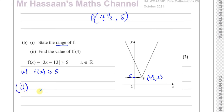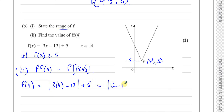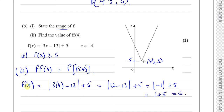Part b(ii) says: find f of f of 4. That means substitute 4 into the function f, then substitute the result back into f. First we find f of 4: replace x with 4 to get the modulus of 3 times 4 minus 13, plus 5. That's the modulus of 12 minus 13, plus 5, which is the modulus of negative 1, plus 5. The modulus of negative 1 is 1, so that's 1 plus 5, which equals 6. So f of 4 equals 6.